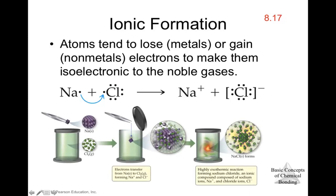If we take sodium as a solid and chlorine as a gas and combine them in a chamber, the sodium starts to release electrons, which are transferred to the chlorine gas. As electrons are lost, sodium ions form, and as chlorine receives those electrons, chloride ions form — eventually producing sodium chloride. This process is an exothermic reaction.